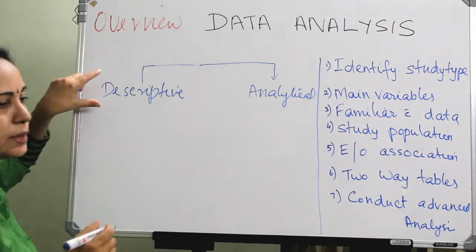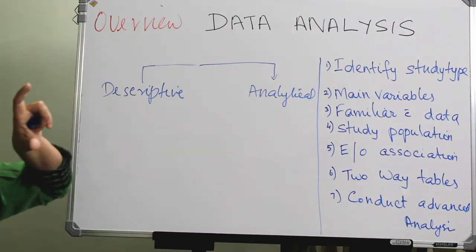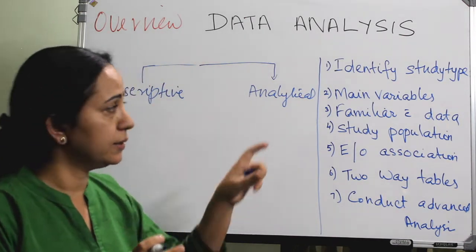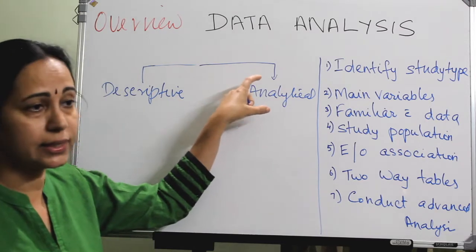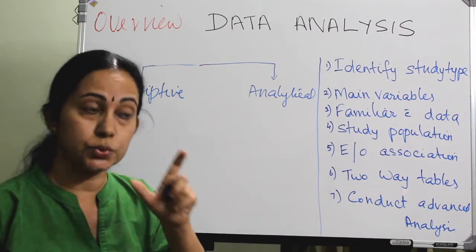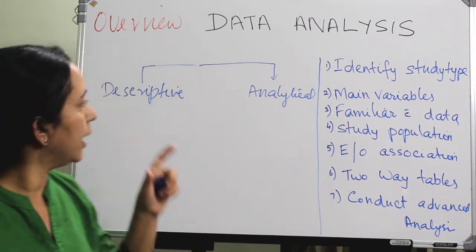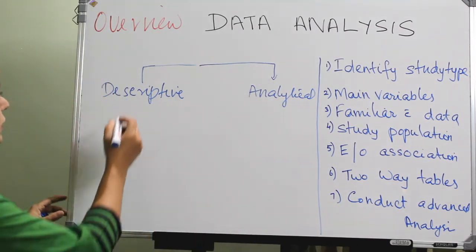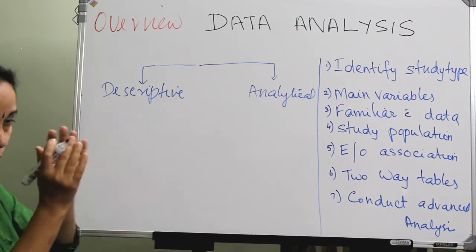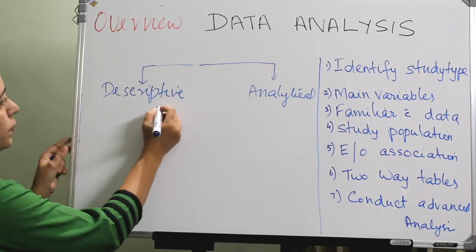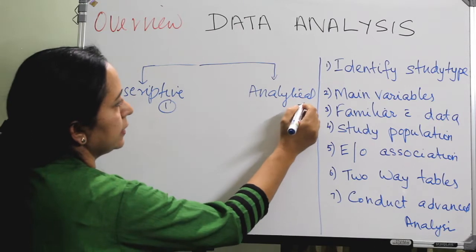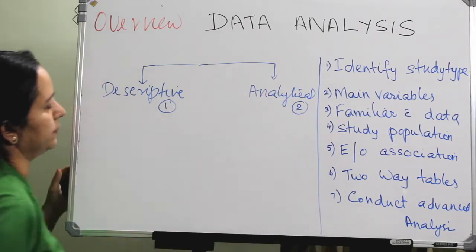In a descriptive study, there is only one group — no comparison. For analytical studies, there is comparison between two groups. If it is a descriptive study, that is only one group; and in an analytical study, there are two groups.